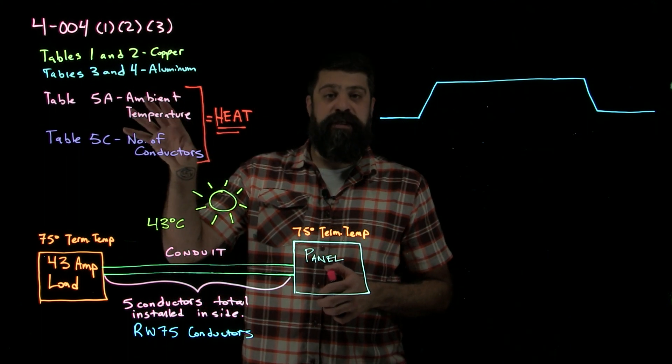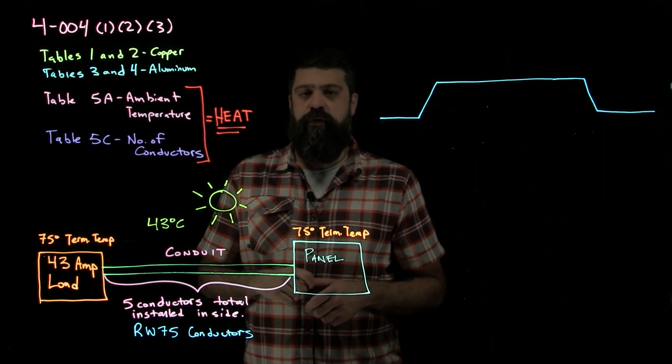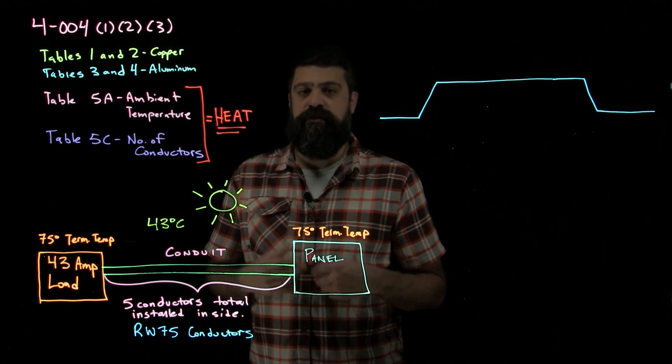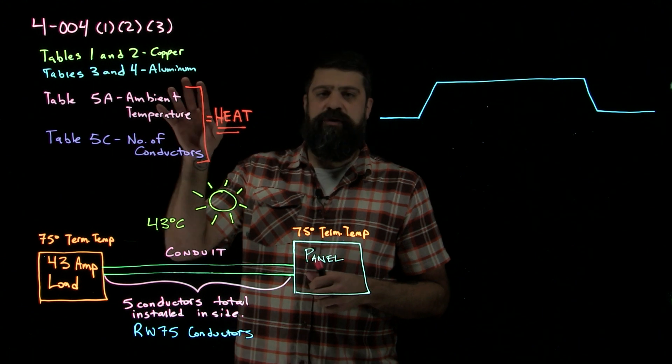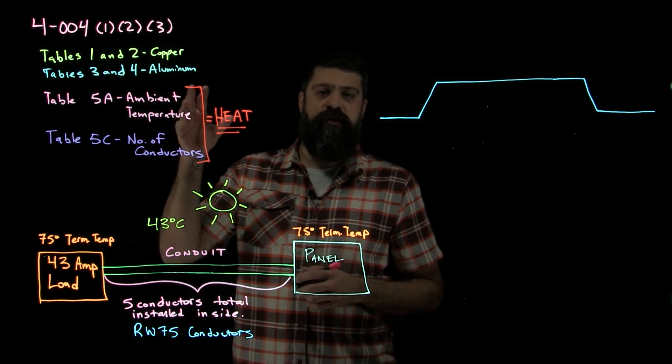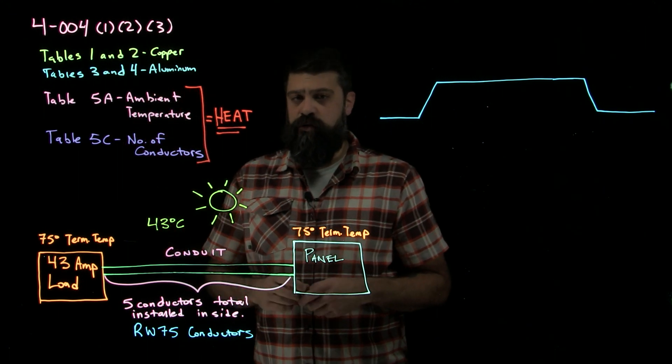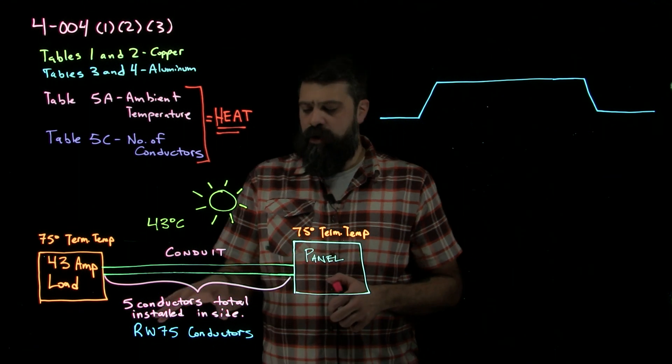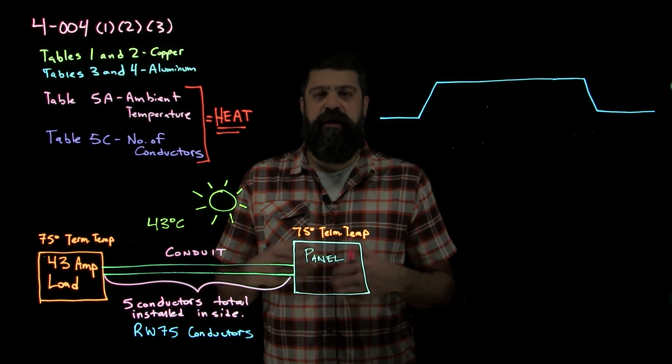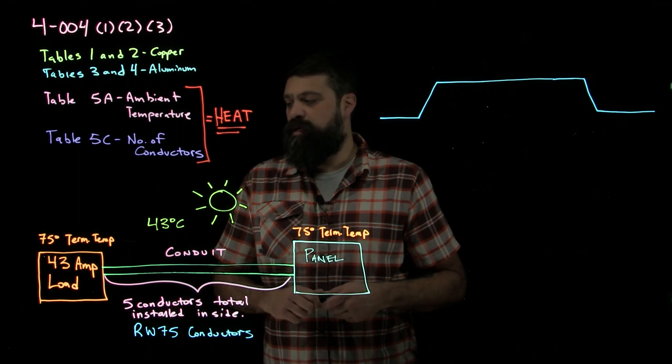So when we look at our tables from rule 4004 that tells us how to size conductors and what we need to do, tables 1 and 2 give us the allowable ampacities for copper conductors, tables 3 and 4 for aluminum conductors. So RW75, we didn't state it, we default to copper conductors.